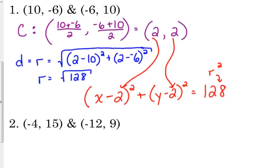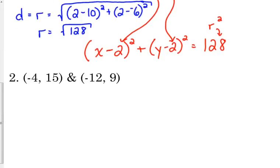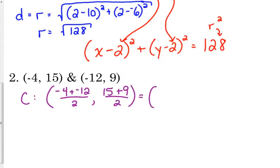Let's do one more, and then I'm going to let you guys practice with this. The center comes from the midpoint when we've got the endpoints of the diameter. So negative 4 plus negative 12 over 2, 15 plus 9 over 2. That is negative 16 over 2, negative 8, and 15 plus 9, 24 over 2 is 12. Wait, did I add something wrong? Yes, I did. 15 plus 9 would be 24, not 14. Thank you.